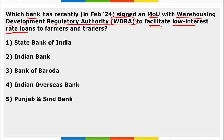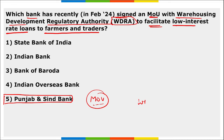Which bank has recently signed an MoU with the Warehousing Development and Regulatory Authority — WDRA — to facilitate low interest rate loans to farmers and traders? It is Punjab and Sindh Bank. Punjab and Sindh Bank recently signed an MoU with WDRA to provide low interest rate loans to farmers and traders so they can set up their own warehouses and silos to store harvested grains.